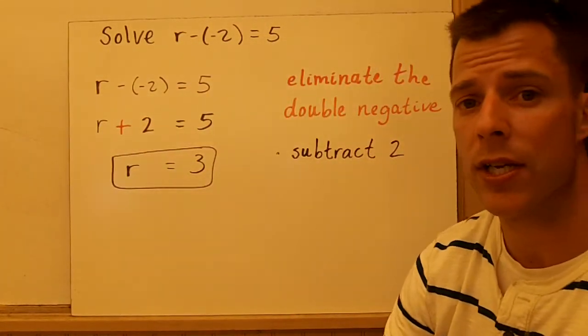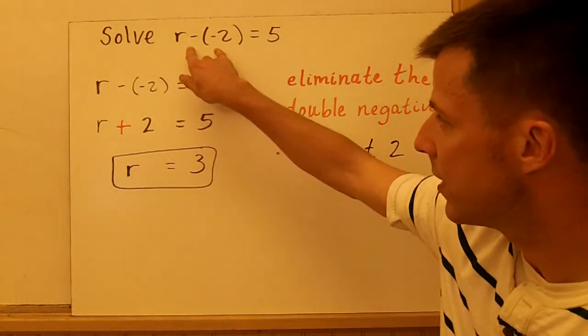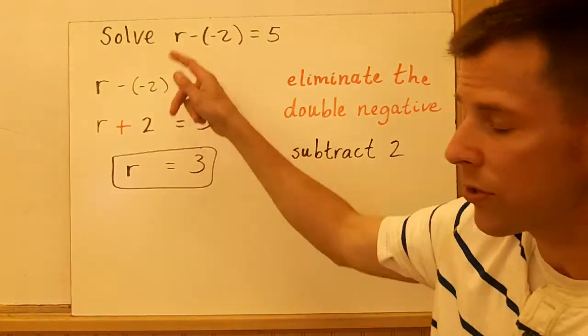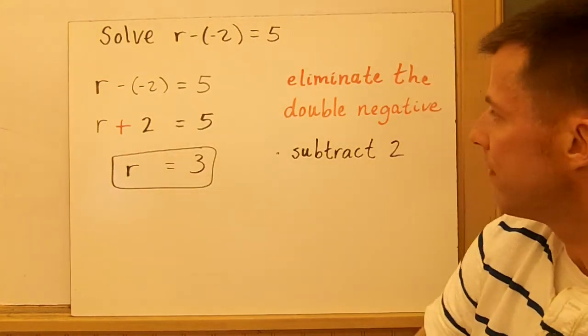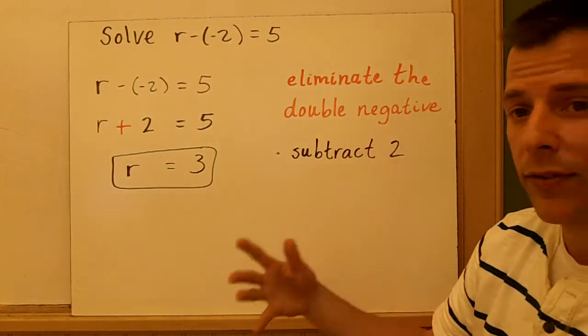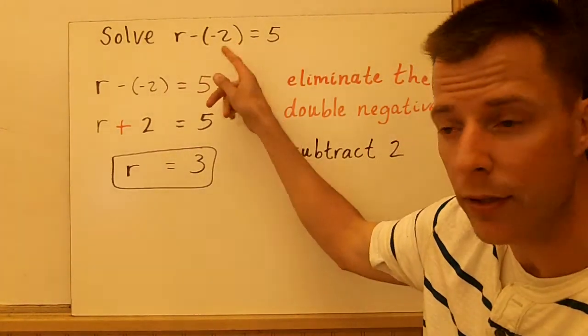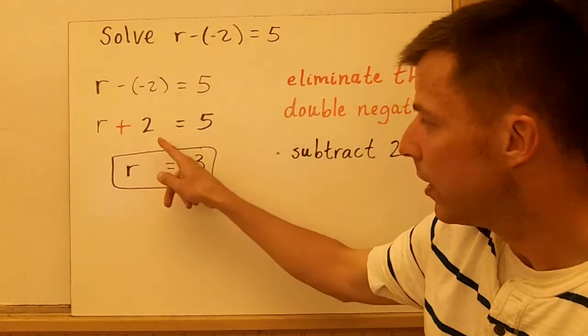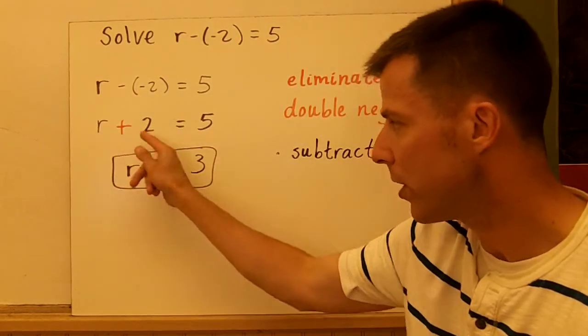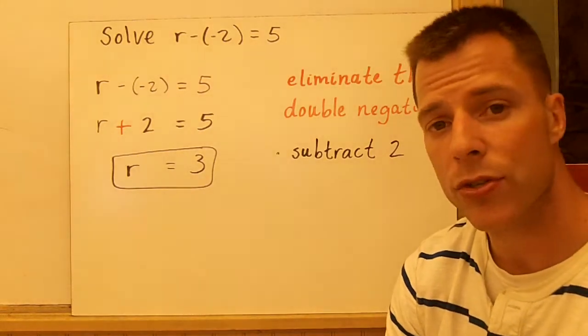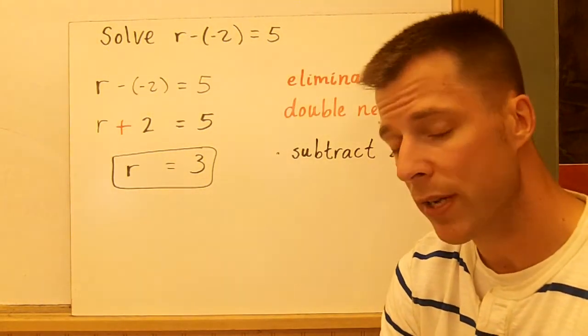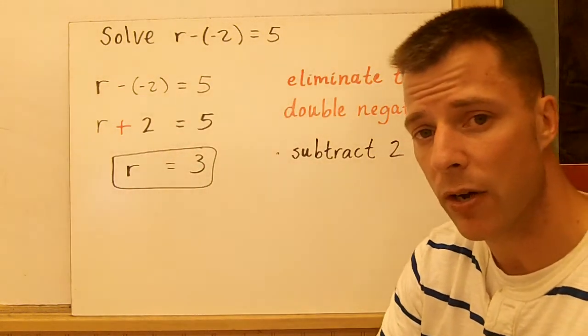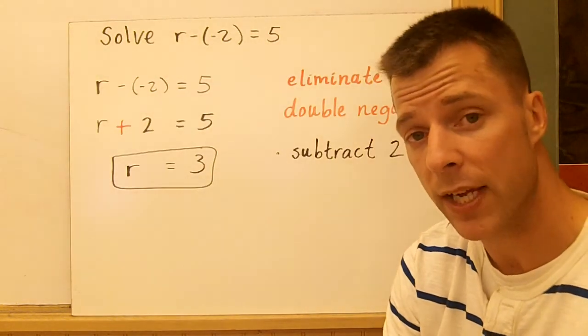Our last example goes back to adding or subtracting, but I wanted to address this subtracting a negative number idea. So it's still a one-step equation because there's only one operation, but we actually have to simplify first. So we're going to eliminate the double negative, and to do that, when you subtract a negative number, that just becomes addition. So instead of r subtracting negative 2, you get r plus 2 equals 5, and here's that mental math. What number plus 2 is 5? The answer is 3. So those are one-step equations. If you can use mental math, I would strongly suggest you use that, but you can do the algebraic steps. And remember, just think about undoing whatever operation that you see. Thanks, guys. We'll see you next time.